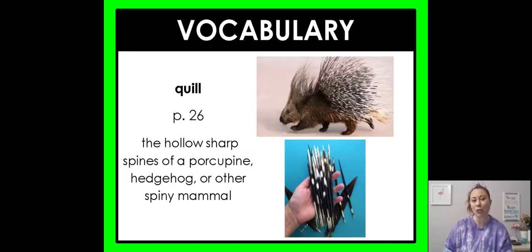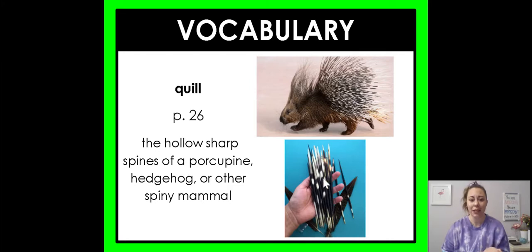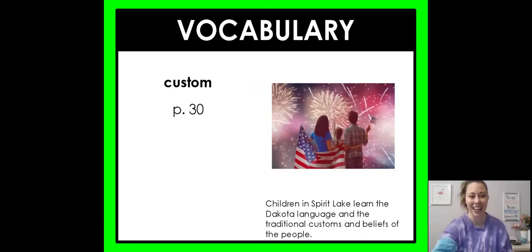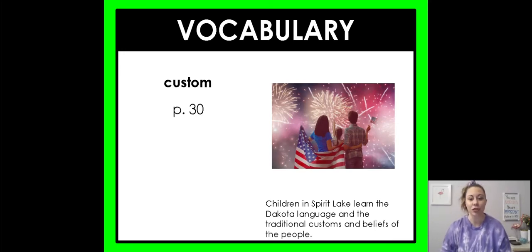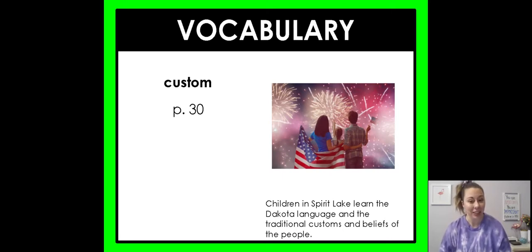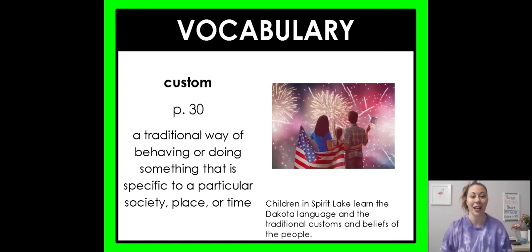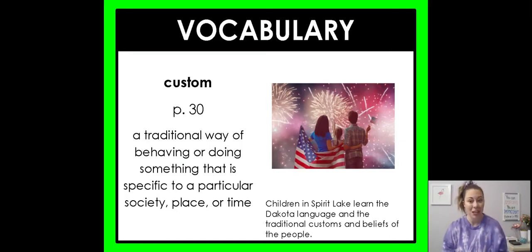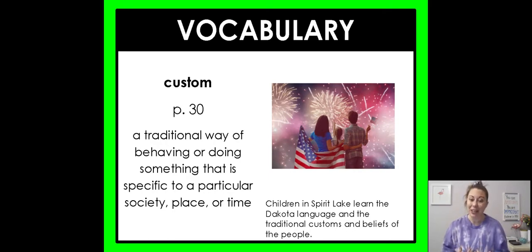For vocabulary, we have the word quill — a quill is a hollow sharp spine of a porcupine, hedgehog, or other spiny mammal. You can see we have our porcupine here and a picture of the quills. Our next word is custom. Children in Spirit Lake learn the Dakota language and the traditional customs and beliefs of the people. Celebrating the 4th of July with fireworks is a traditional US custom — a traditional way of behaving or doing something particular to a society, place, or time. If you went to Australia, they wouldn't be celebrating the 4th of July like we do here.